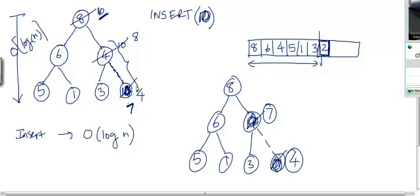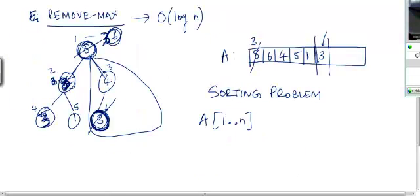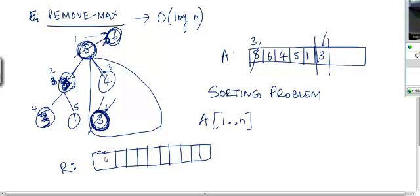And after inserting every element, you will ensure that both the shape property and the heap property are maintained. And at the end, you are going to get a heap with those n elements. Then what you can do is you can repeatedly extract the maximum element and have another array. So let's call this array as R. This is going to contain the result. So repeatedly extract the maximum element and store them one by one into this array.